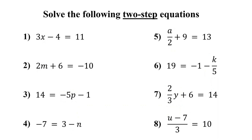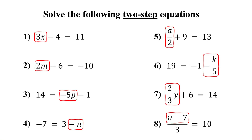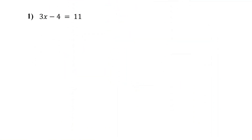In this lesson, you will learn how to solve two-step equations. These are equations that take just two steps to solve. The first step is to isolate the variable term — that is the part with the variable. Once we isolate the variable term, the second step is to isolate the variable itself, and that is our goal. To complete these steps, we will use opposite operations. Let's see this in action with our examples.